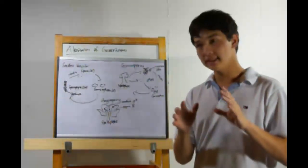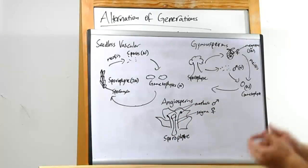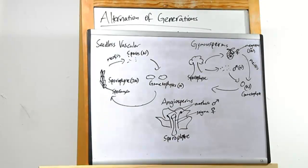Last up, angiosperms. These are flowers. And here I have a rough diagram of a flower. You may have noticed that there's no big cycle. That's because there's not too much to talk about here.